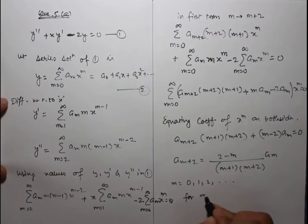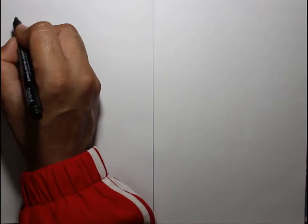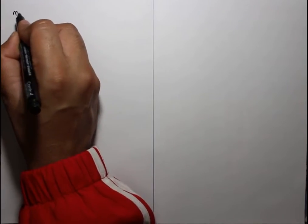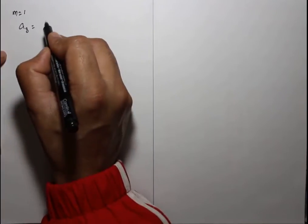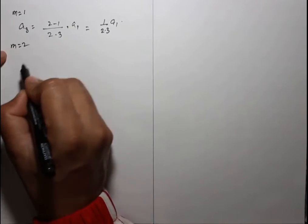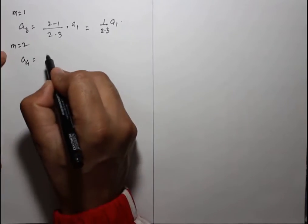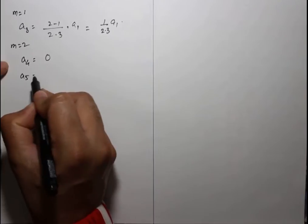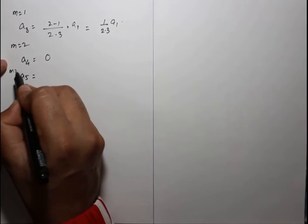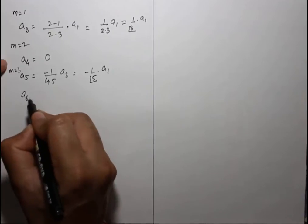For m = 0: a₂ = a₀. For m = 1: a₃ is obtained. For m = 2: a₄ = 0. For m = 3: a₅ is obtained, and a₆ = 0 again.